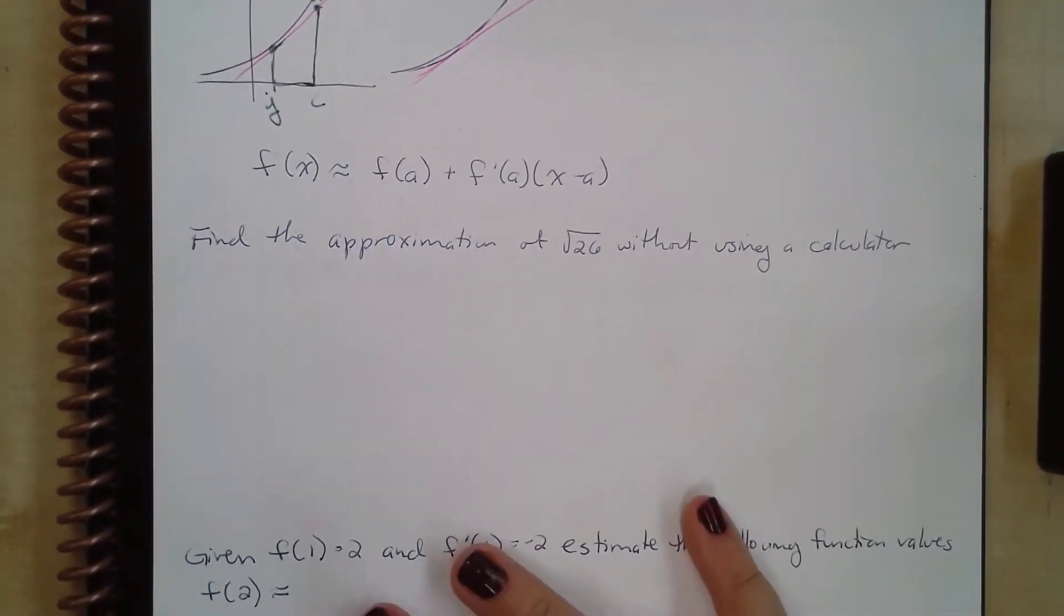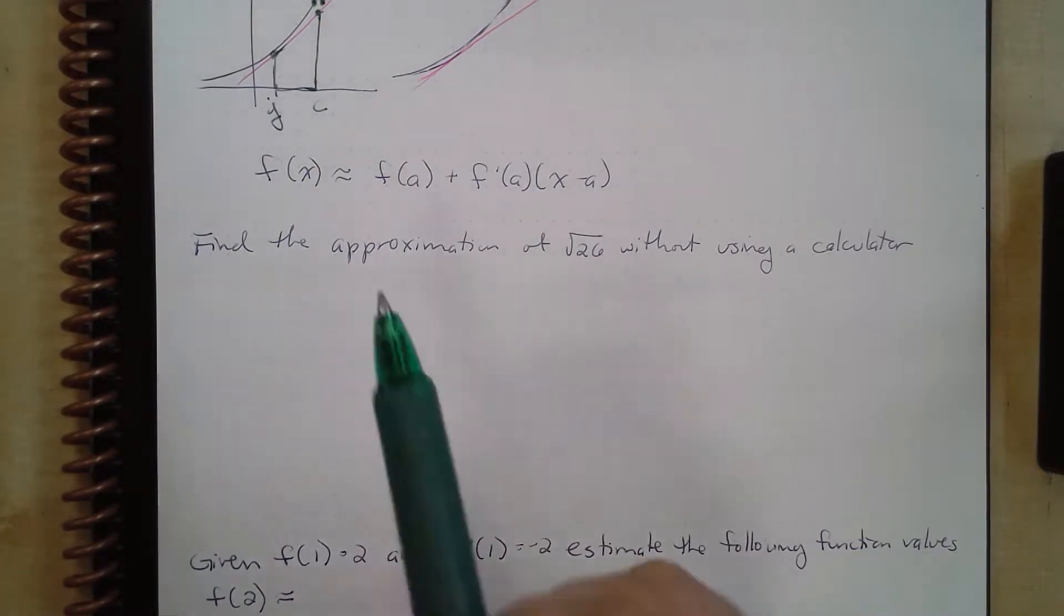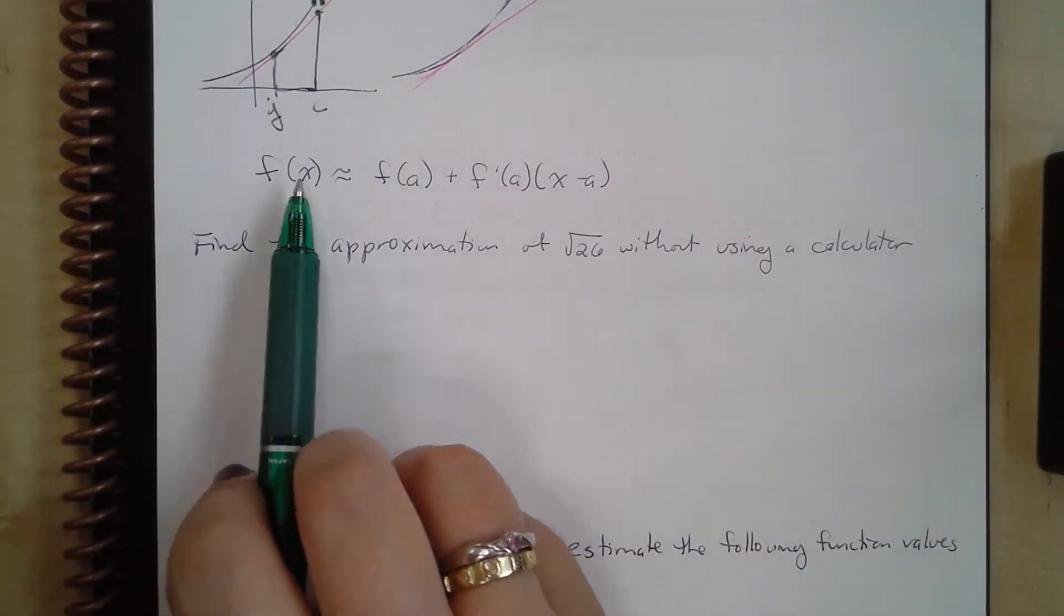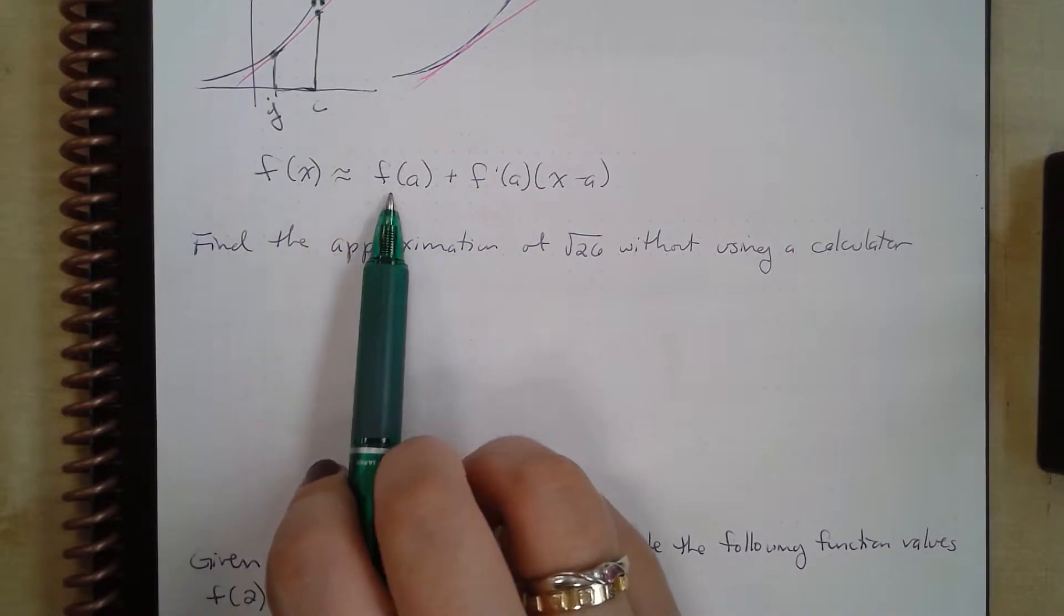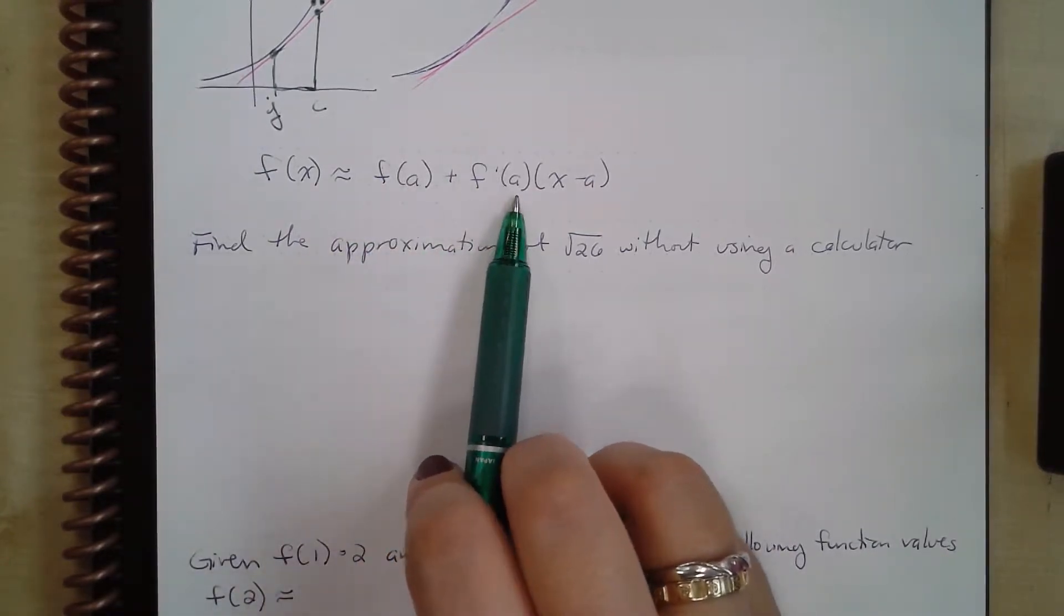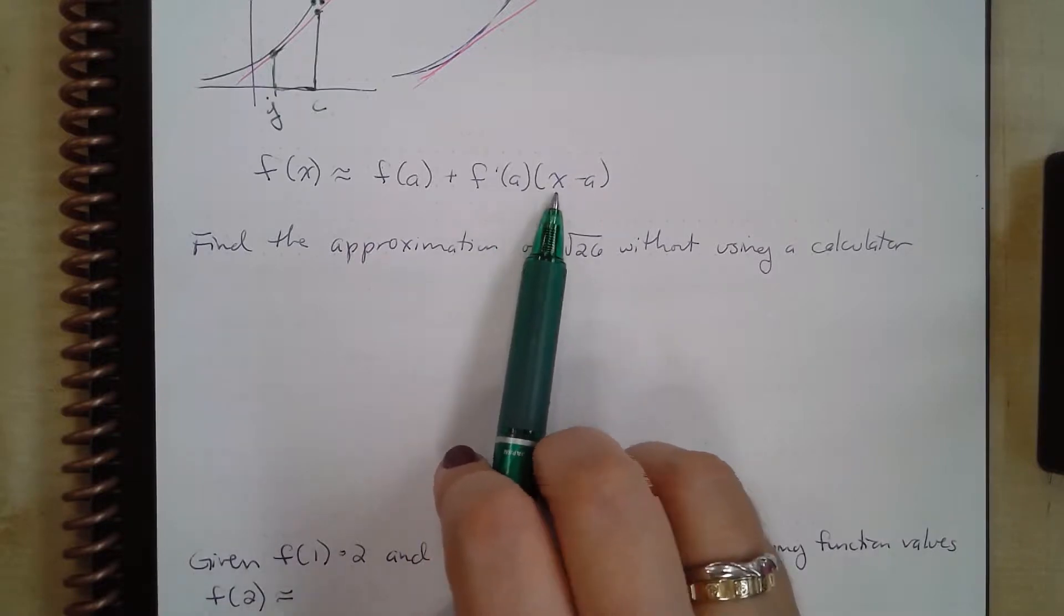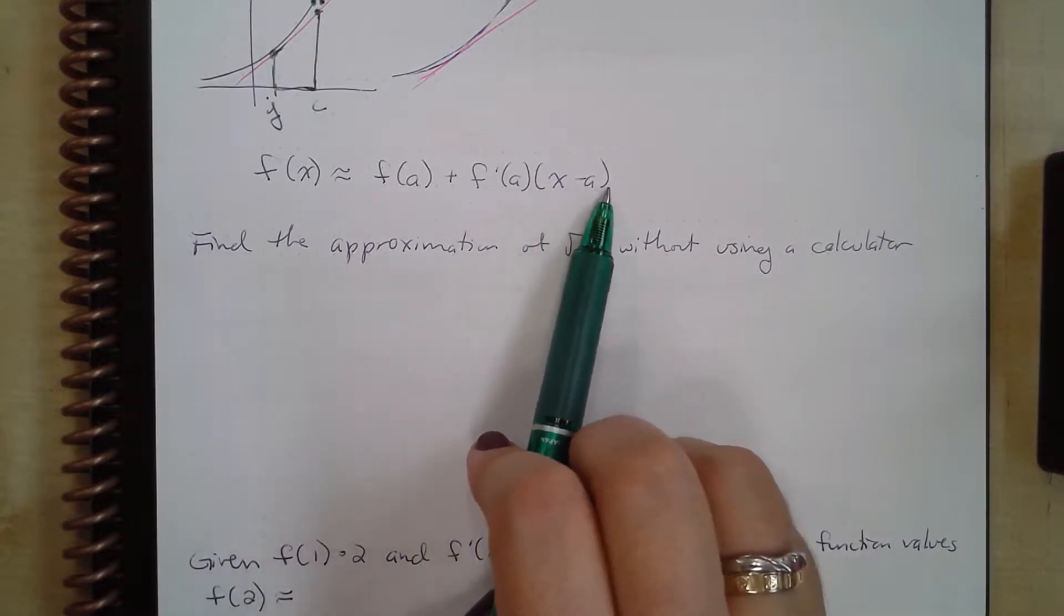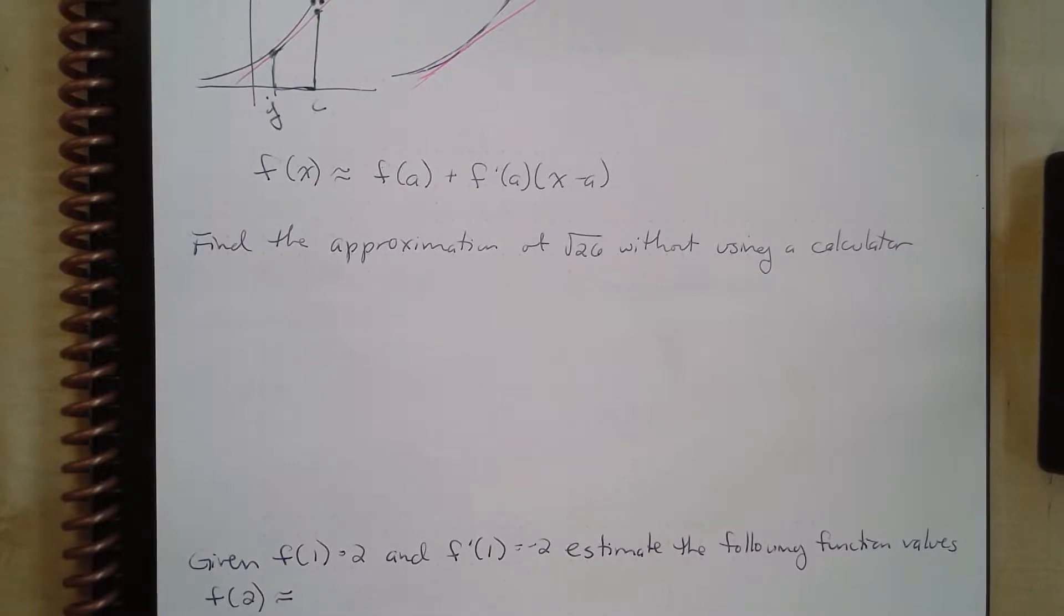In order to use this, we're going to say f(x), the value we're looking for, is approximately f(a), a known value, plus f'(a), the derivative of that known value, times (x - a). So let's actually do this in action.